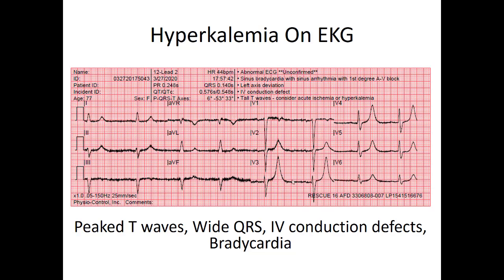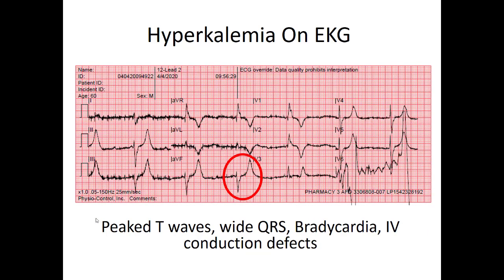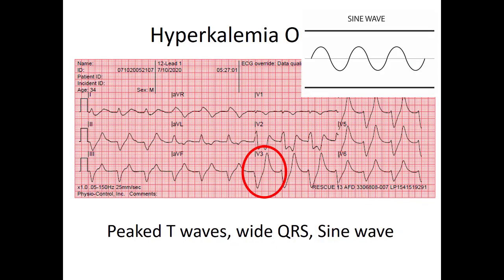Here's another hyperkalemia 12-lead — again, tall peaked T waves, QRS starting to widen a little bit, rate up to 140. Remember the normal QRS is less than 120. Another critically ill, possibly hyperkalemic patient — bradycardic, wide QRS, tall peaked T waves. IV conduction defects as well. Severe hyperkalemia needs to be treated aggressively. Here's another hyper-K — starting to look more like a sine wave as it slows down, spreads out, and widens. Tall peaked T's, big wide QRS, idioventricular rhythm — no P waves. This is hyperkalemia. Burn this one into your head.